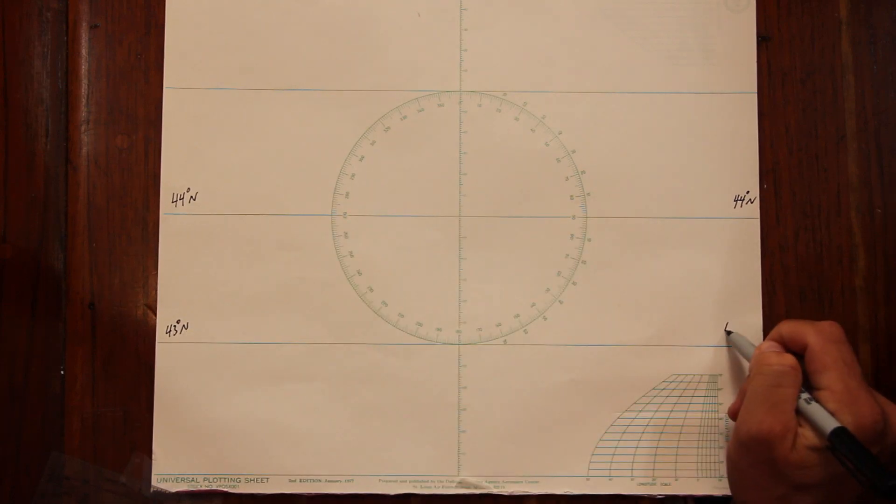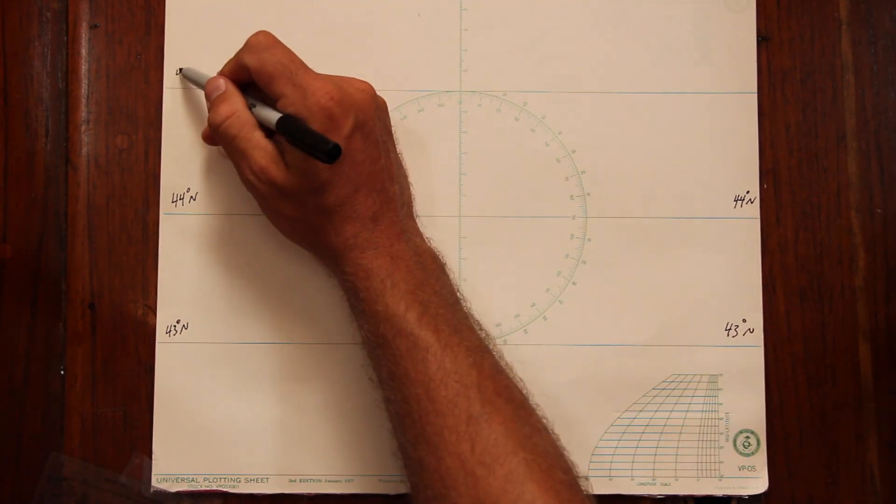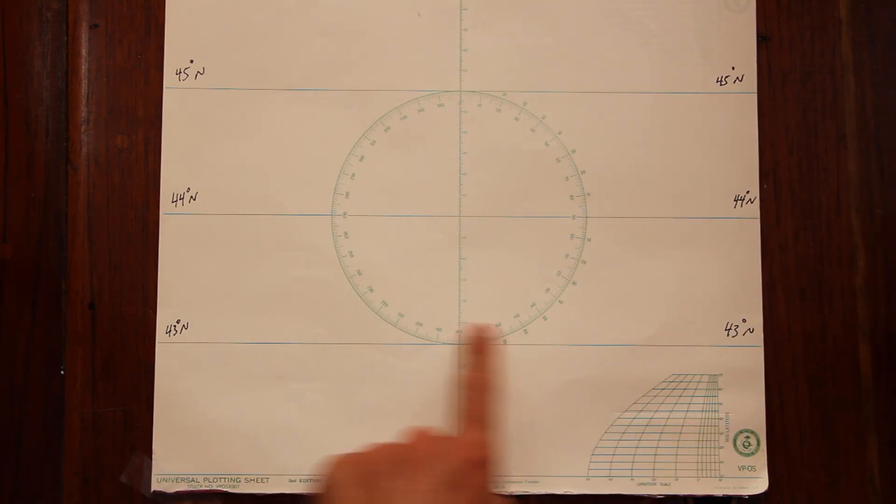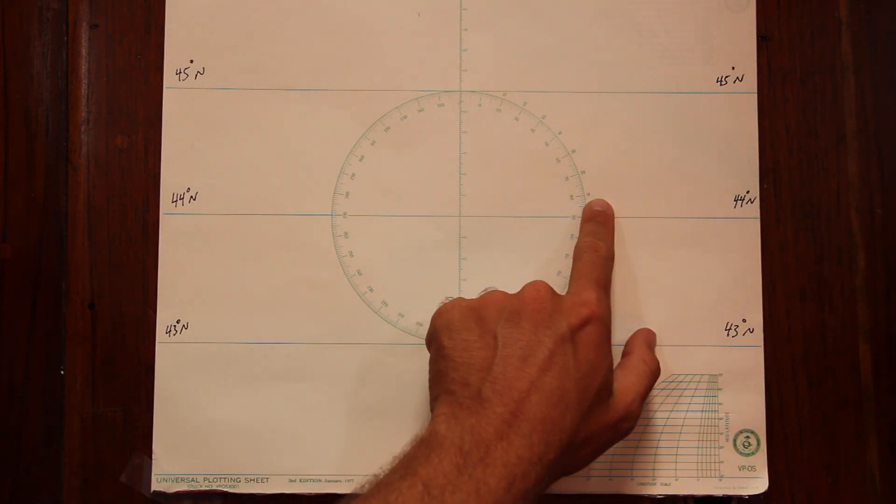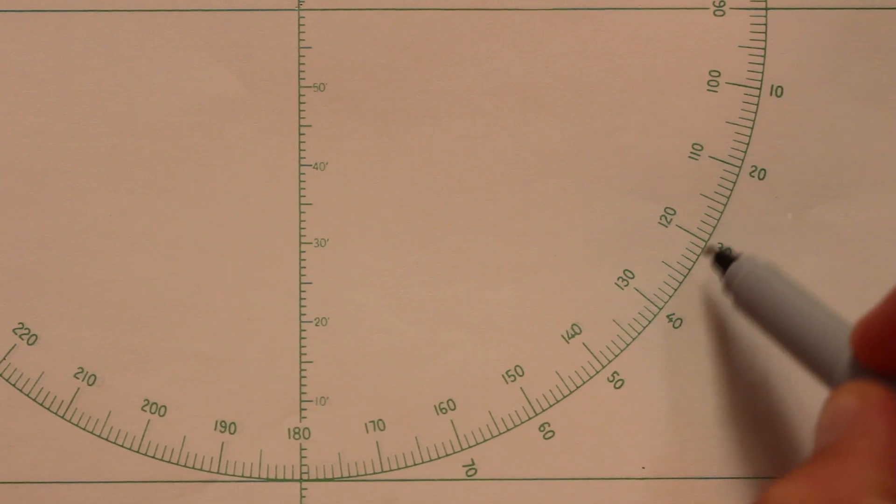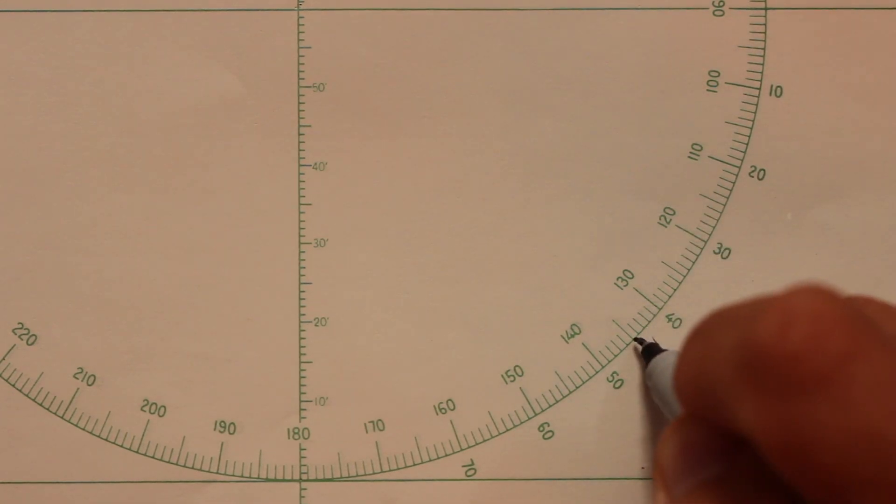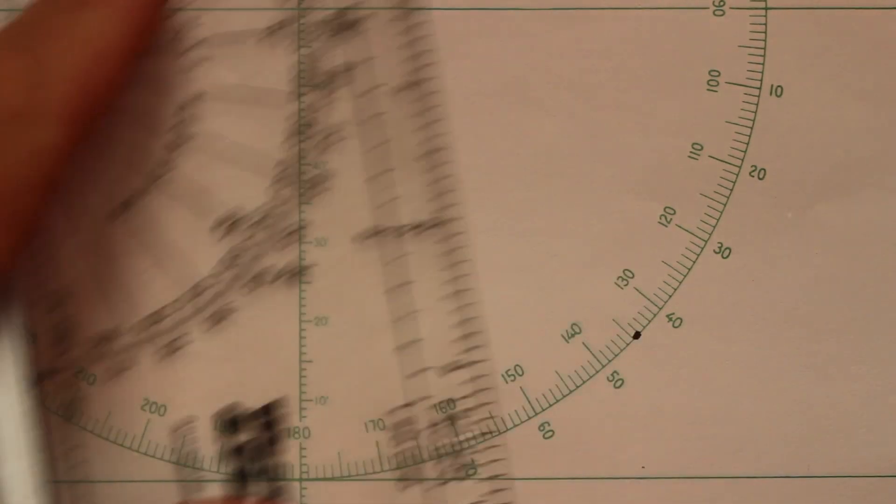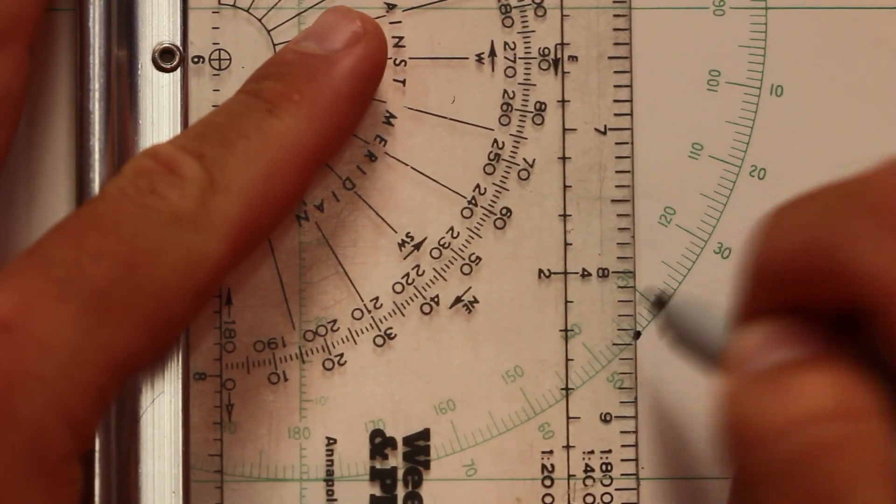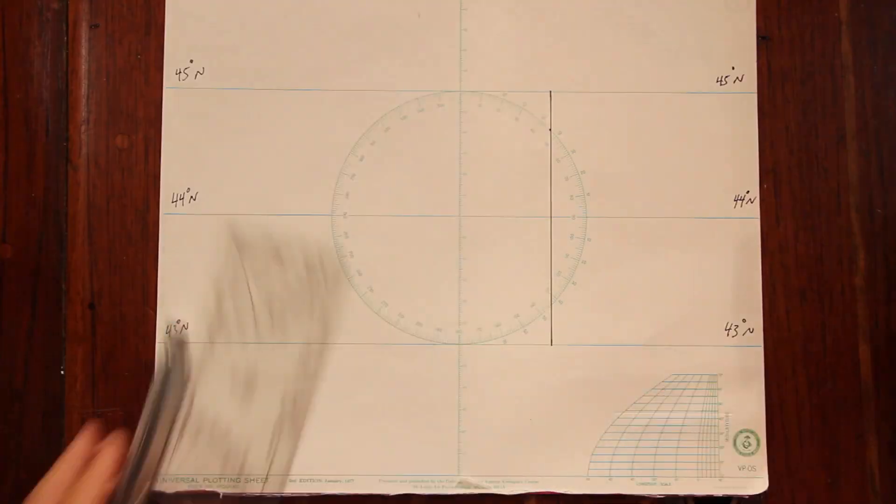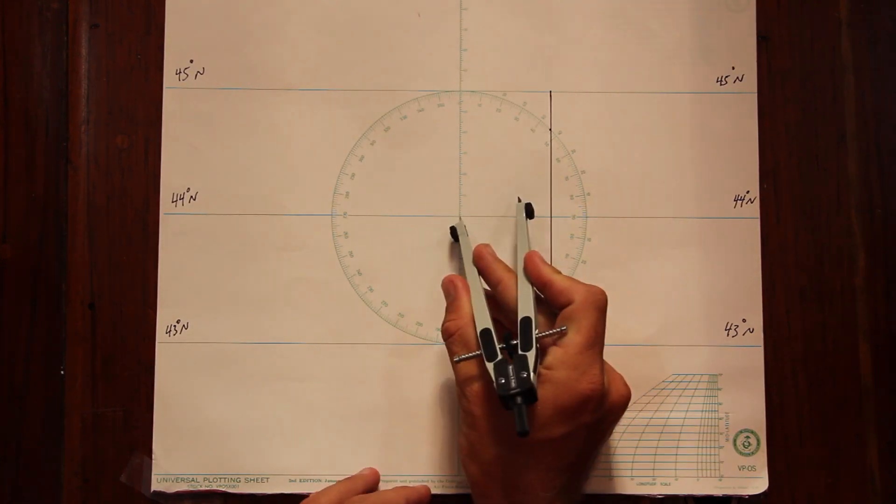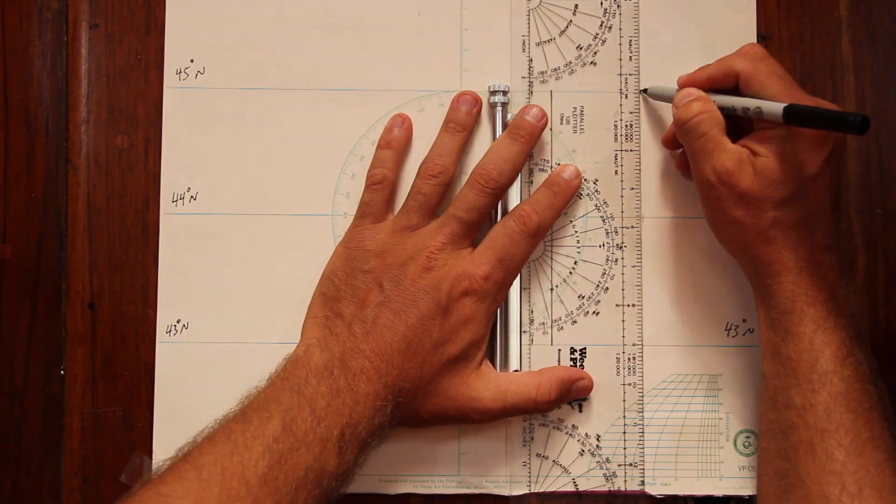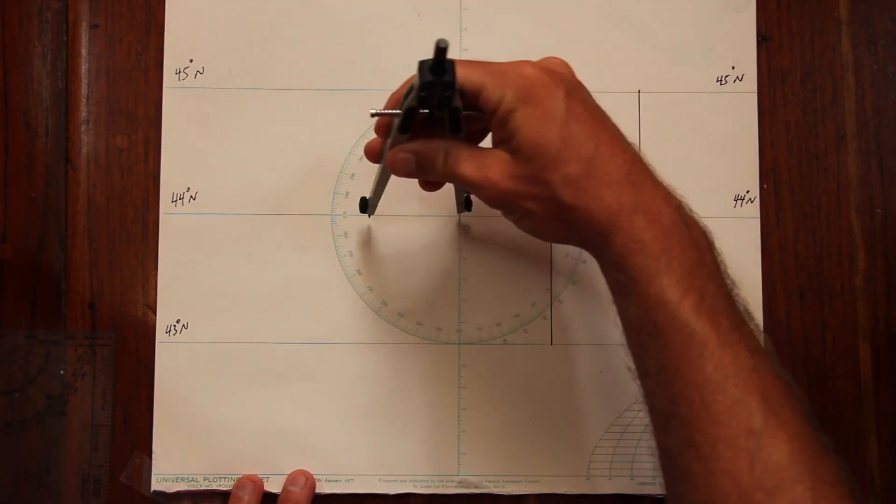After that, fill out the rest of the latitudes for your desired location. Longitude is a bit more tricky and you need to use the scale. On the outside rings, count out to your mid-latitude point and then plot a perpendicular line to determine your longitude distance. From there, building out the UPS is simply a matter of filling in the longitude lines and creating your grid.